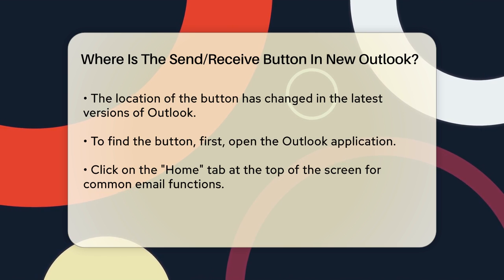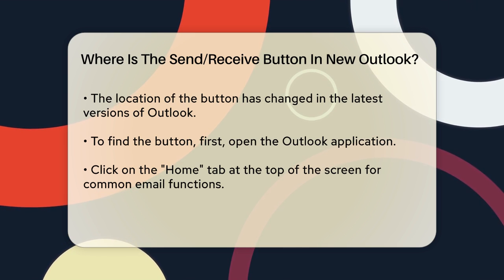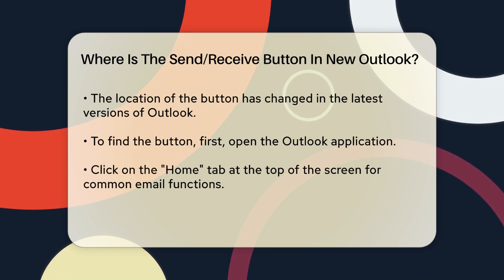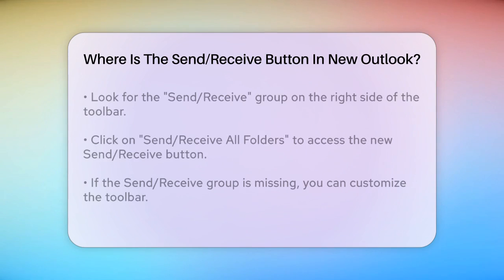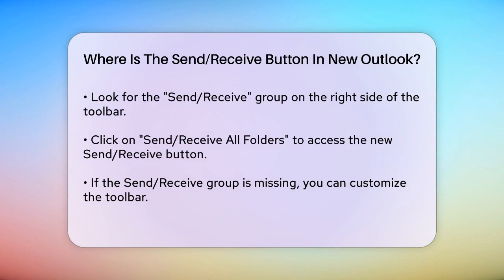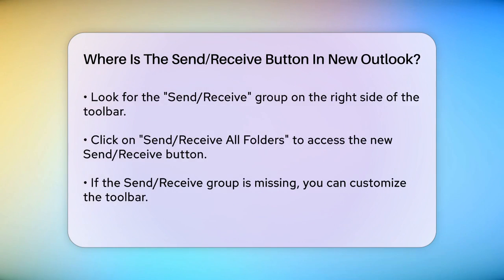Step 3: Find the Send Receive group. In the Home tab, look for a group of buttons labeled Send Receive. This group is usually on the right side of the toolbar. Step 4: Click on Send Receive All Folders. Within this group, you'll see a button that says Send Receive All Folders — this is your new Send Receive button.